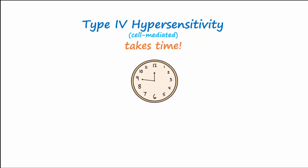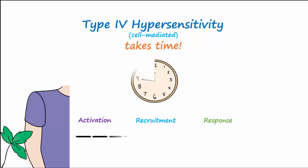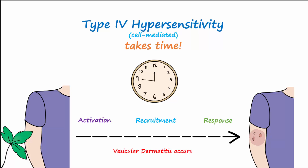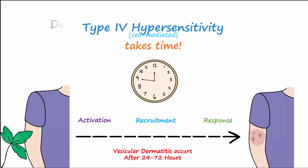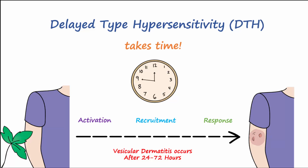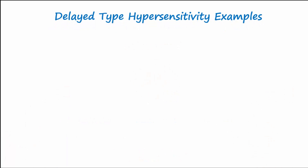It's important to remember that a type 4 hypersensitivity reaction is cell mediated and takes more time to develop than other hypersensitivity types. This is because T cells must be activated and recruited to cause the response. As occurs after contact with poison ivy, one can develop a rash known as vesicular dermatitis within 24 to 72 hours. For these reasons, a type 4 hypersensitivity reaction may also be referred to as delayed type hypersensitivity, or DTH.